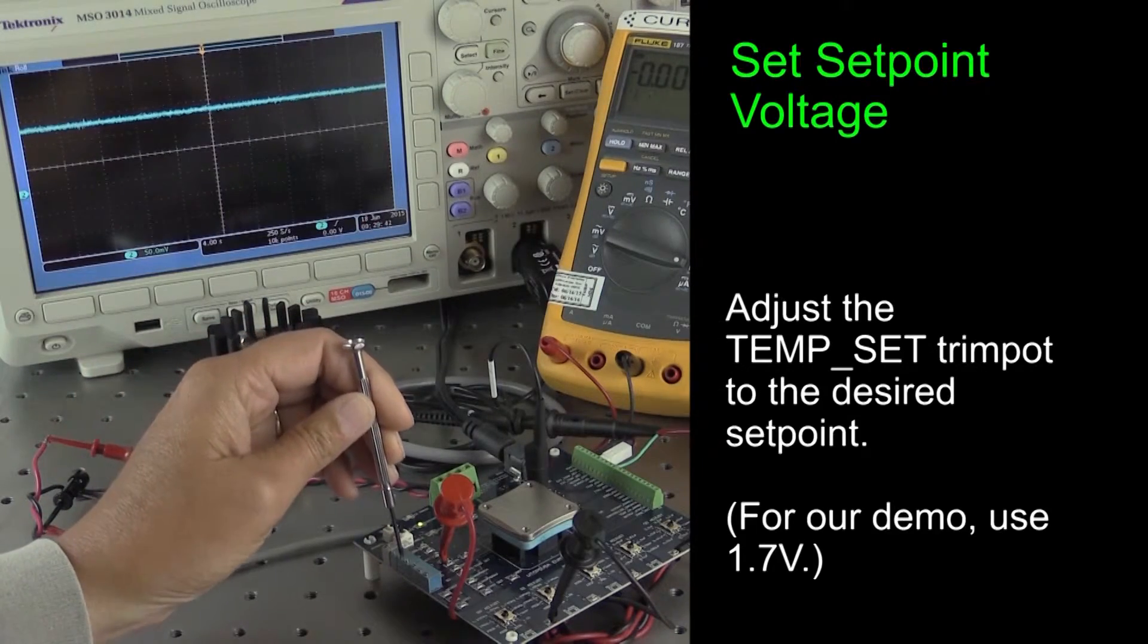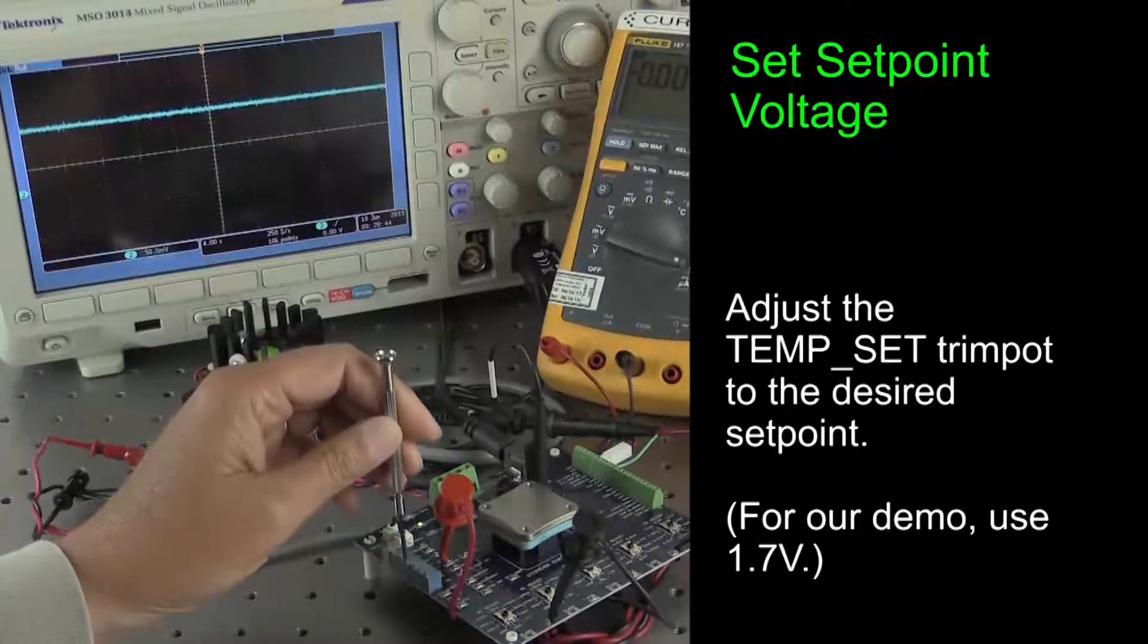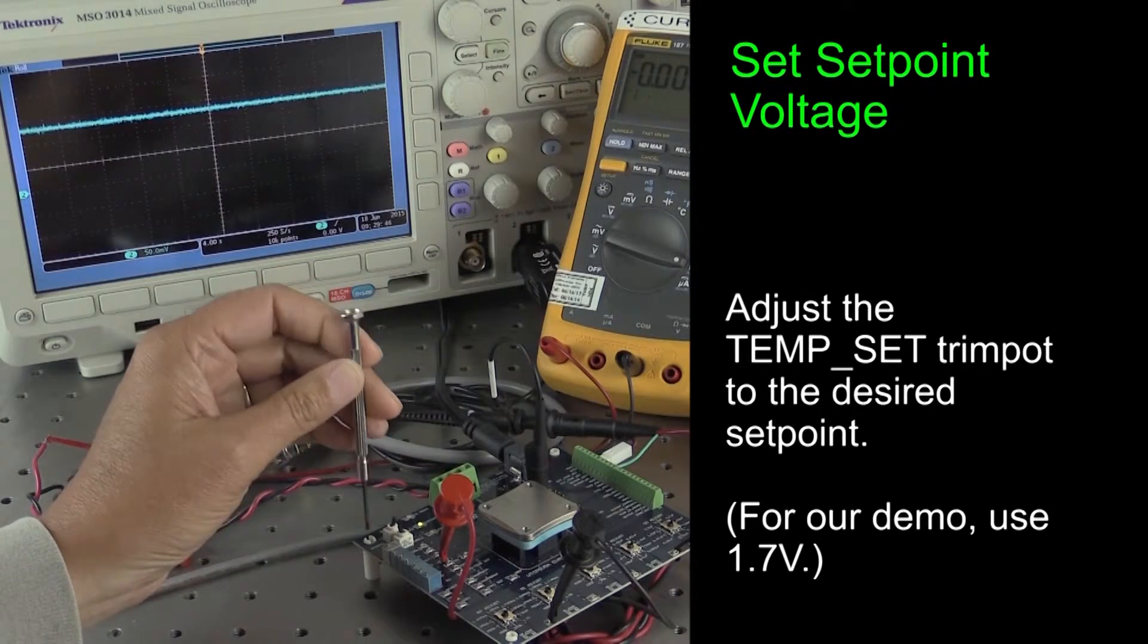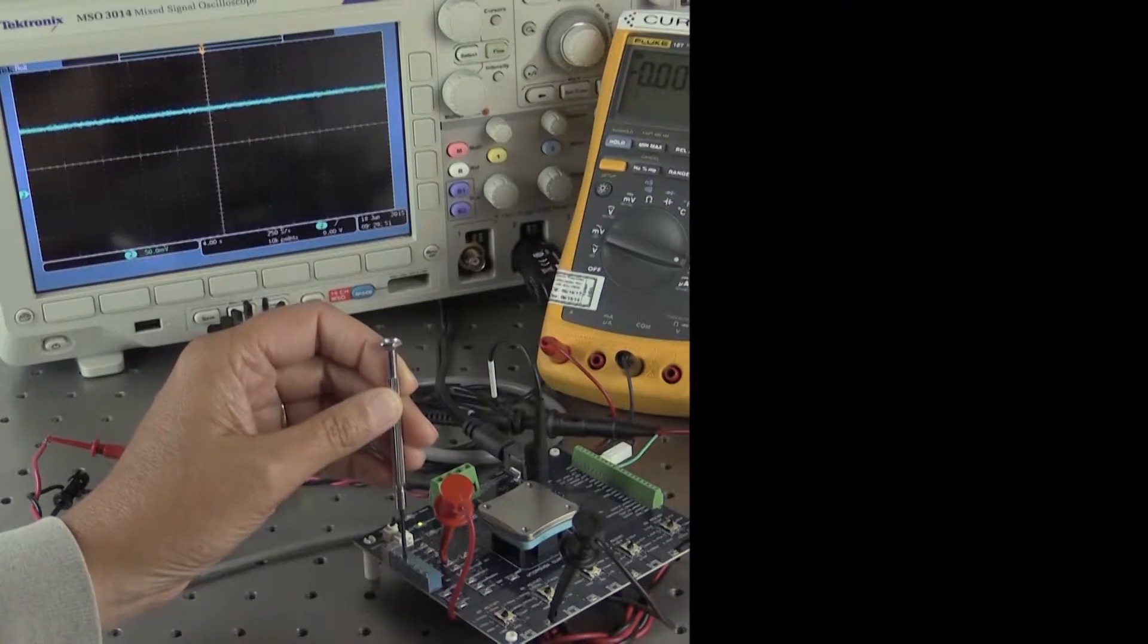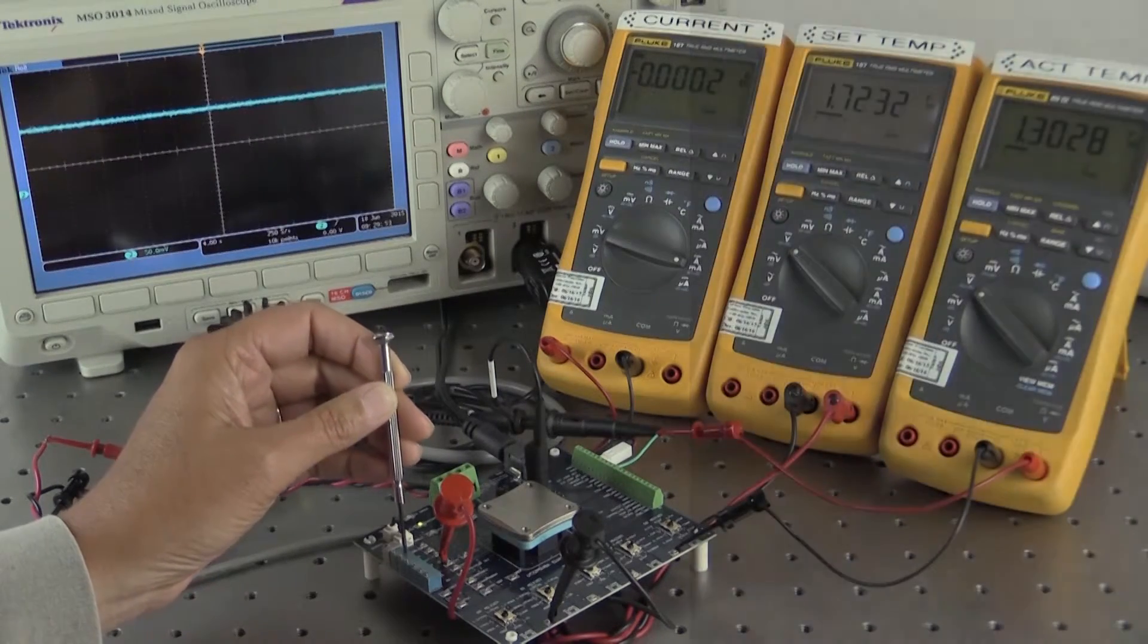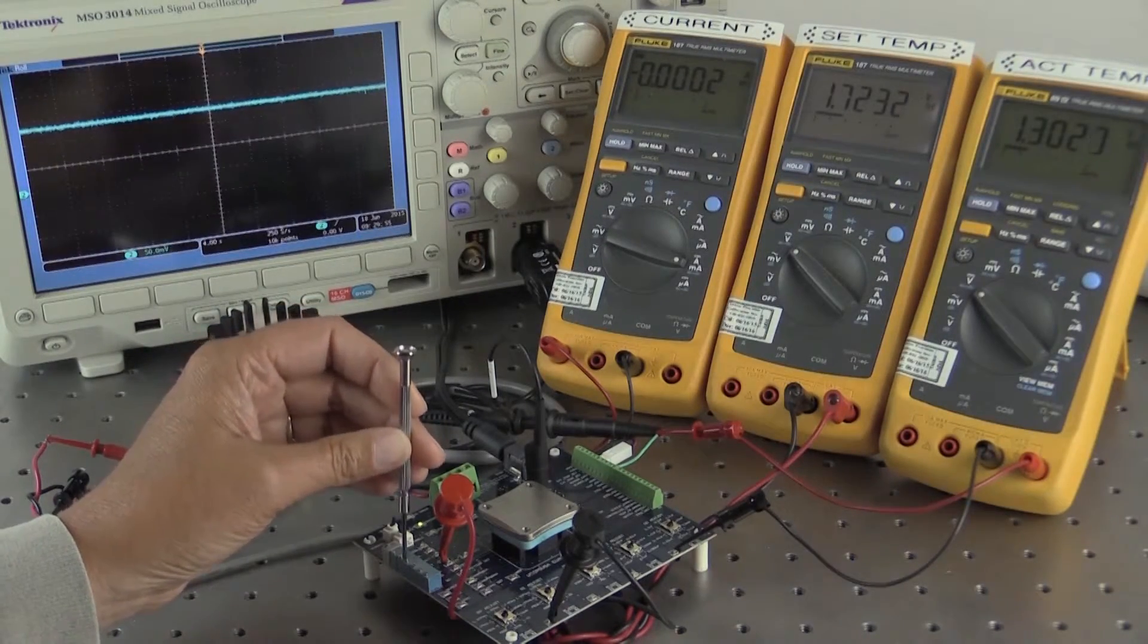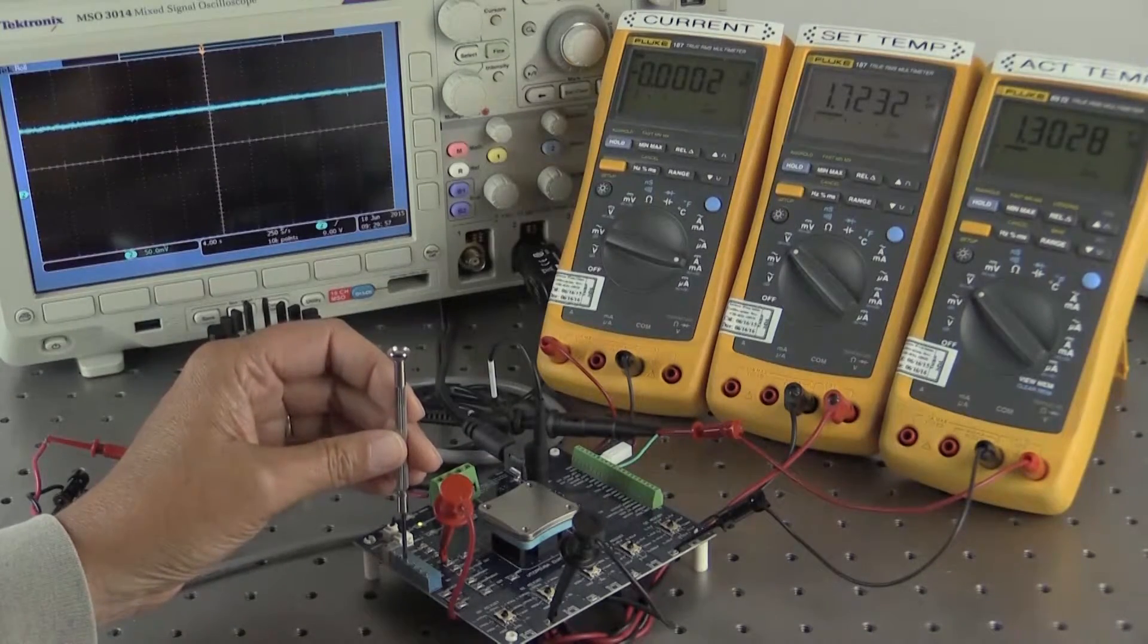For this demonstration, we've chosen a set point of 1.7 volts. For our 10k ohm thermistor, this voltage is slightly above ambient room temperature. The actual temperature multimeter, at 1.3 volts, shows room temperature to be about 30 degrees C.